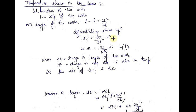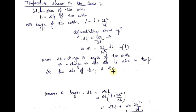After rearranging this equation, I will get the equation of small dh — that is, the change in the depth due to the increase in temperature — where small dL is the change in the length of the cable. Let us take this equation as equation number 1. Now let the rise of temperature be T degrees Celsius.